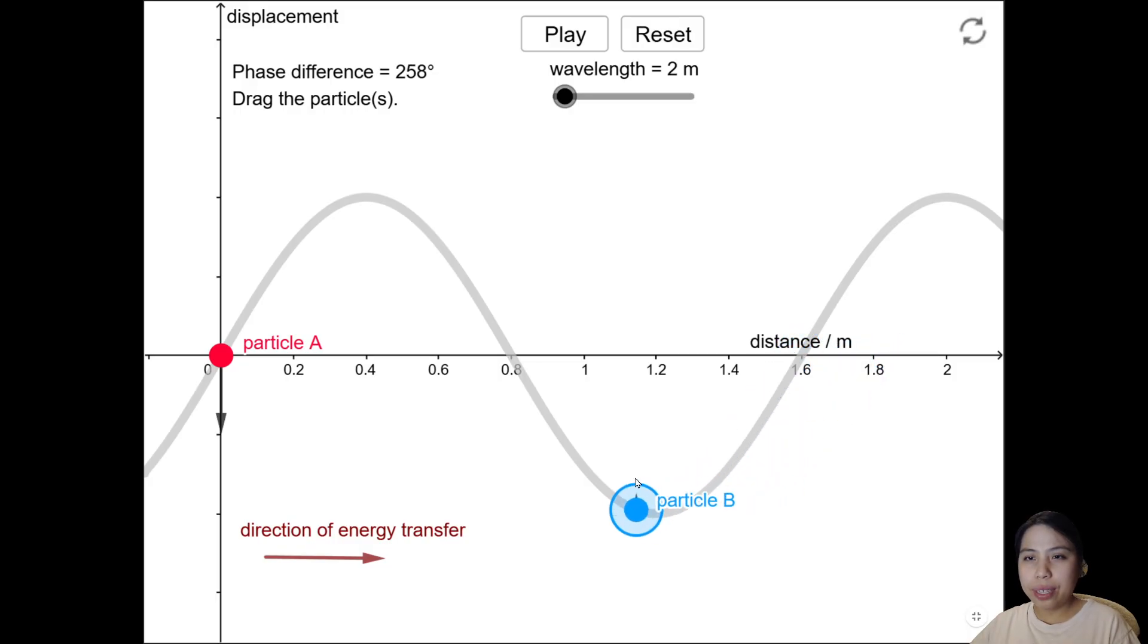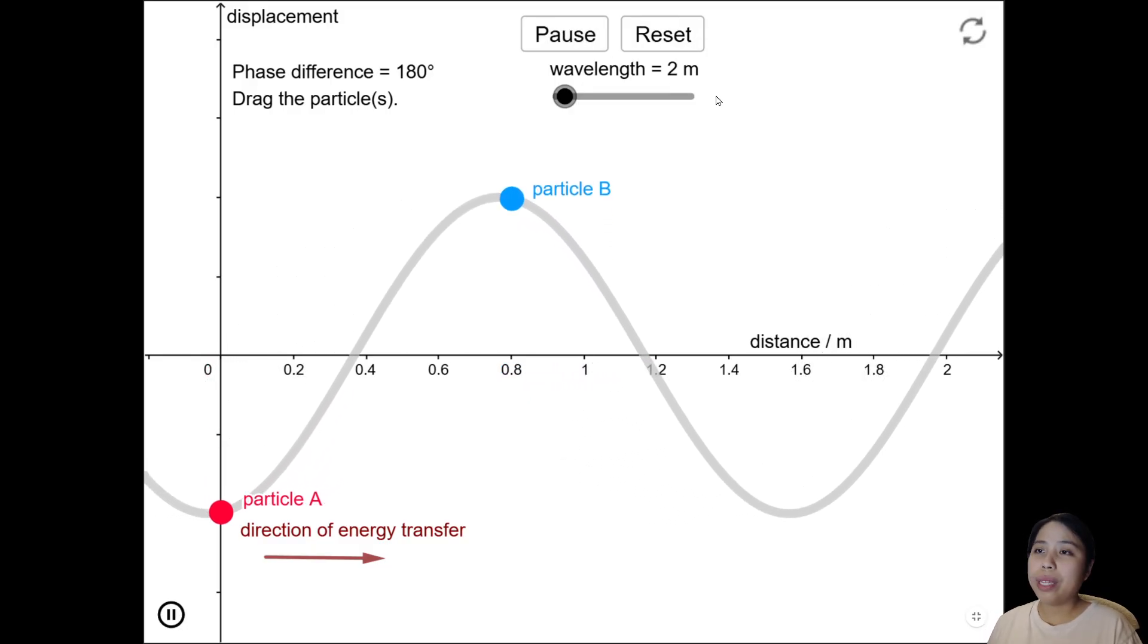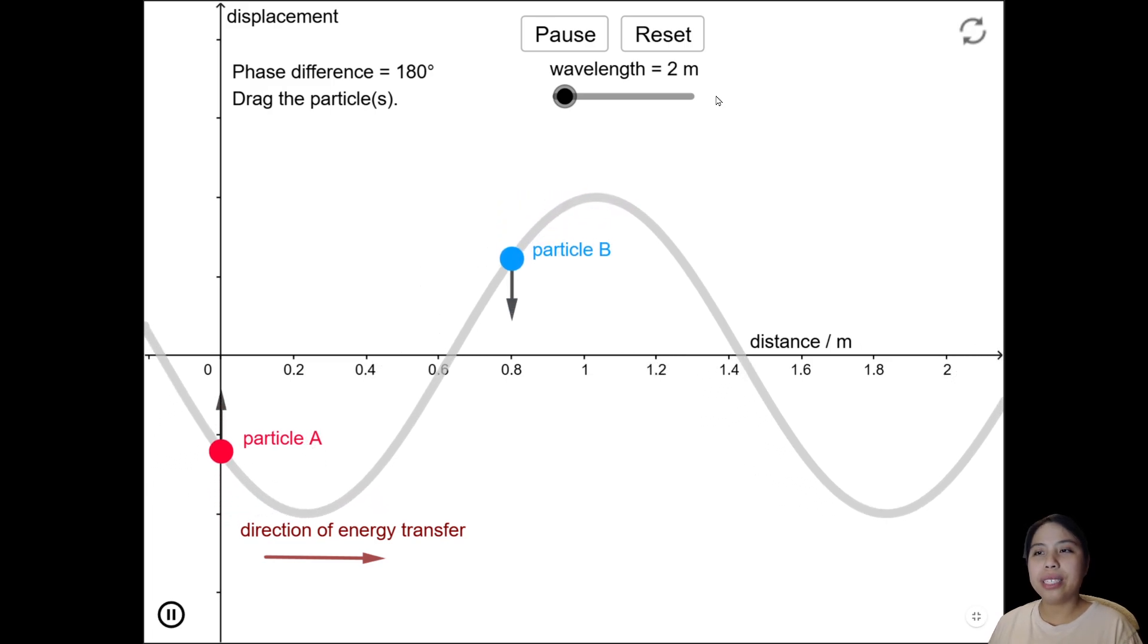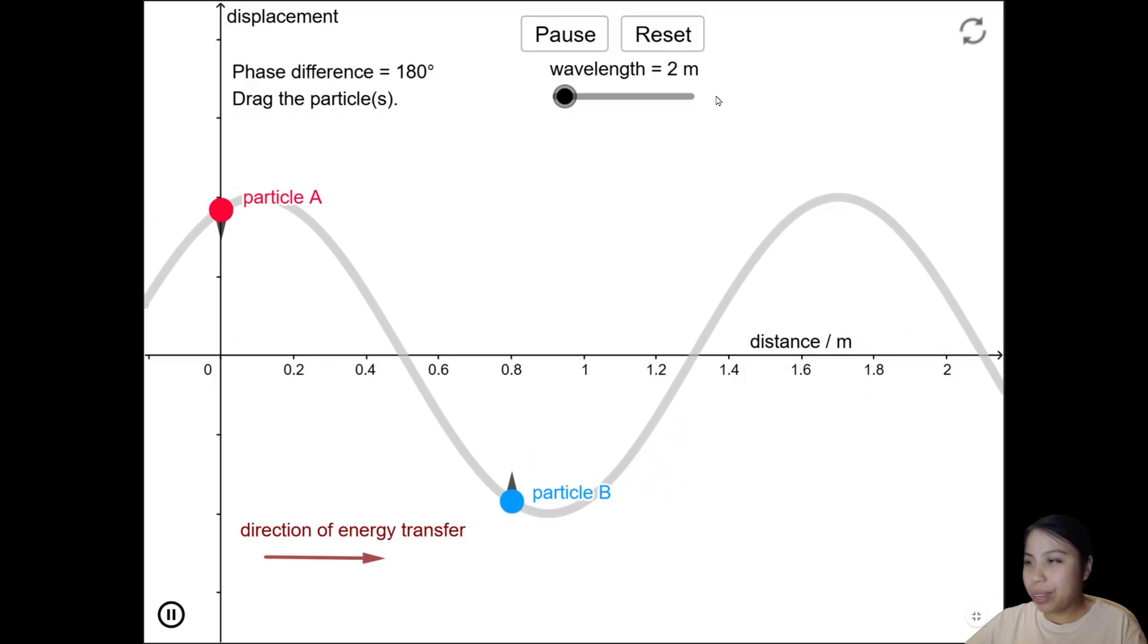What if we have the particles 180 apart? That's half a cycle. So as you can see, the velocity - one is going to go up following this wave, and the other one is going to go down. Let's hit play. And you notice these two particles always move in opposite direction - one is lagging behind the other.